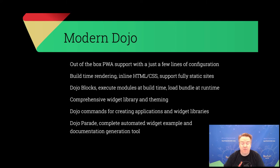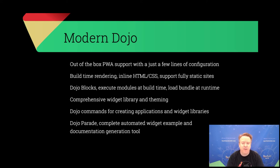We have a comprehensive widget library that includes theming, and Dojo 7 added a material theme for it. We have CLI commands for creating both applications and widget libraries — different tools for generating the scaffolding and infrastructure you need. And we have a new thing called Dojo Parade, which is a way to generate a browsable collection of widgets along with documentation about each of them.